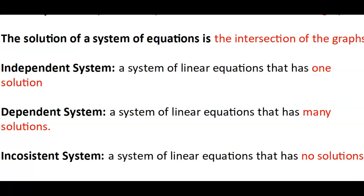An independent system has one solution. Think of the word independent — if you're independent of other people, you're by yourself, doing it alone. A dependent system has many, many solutions — you're depending on something else, and your family has many people. An inconsistent system has no solutions. Think of an inconsistent friend — sometimes they hang out with you, sometimes they don't. That's parallel lines: no solution. Parallel lines are inconsistent.